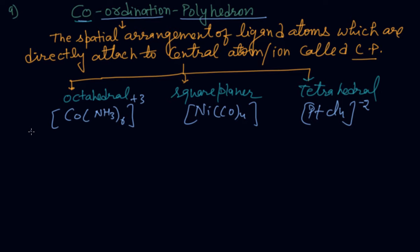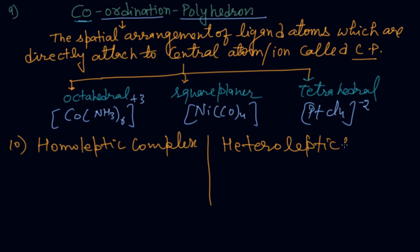Then next, one important and easy. It has been asked in exam also. Homoleptic complex and heteroleptic complex. In homoleptic complex, only one type of ligand are present. I can give you example Cu(CN)4 negative 3.